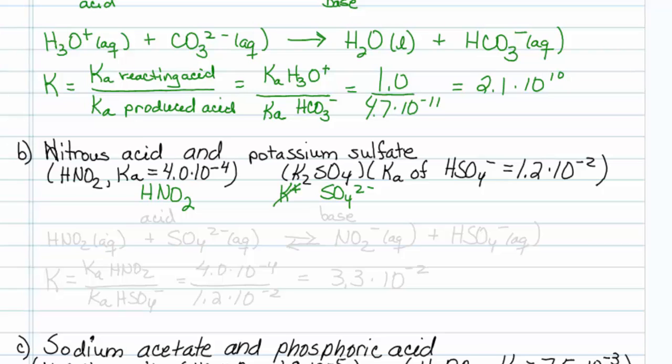Alright, well potassium is not on our acid base table, but nitrous acid is an acid, sulfate is a base. So my reaction has to be HNO2 plus sulfate going to the conjugate base, which is NO2 1 minus, and the conjugate acid of sulfate, which is HSO4 1 minus.